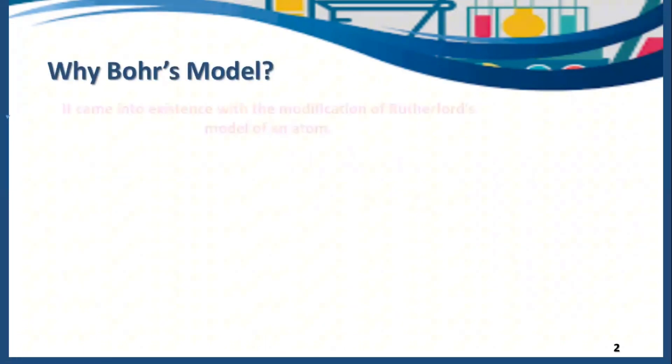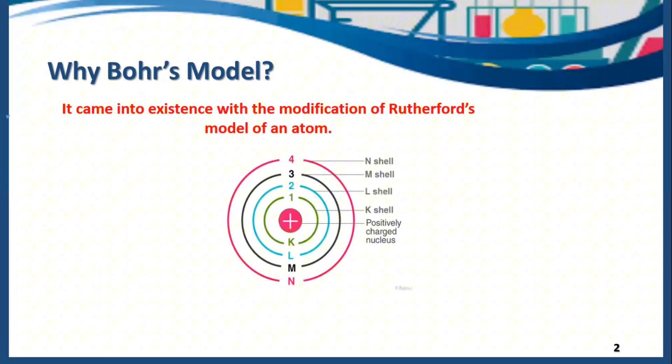Why Bohr's model? Bohr's model came into existence with the modification of Rutherford's model. Basically, Bohr's atomic model gave us an idea about shells and orbitals.